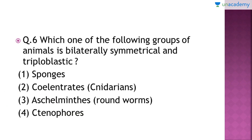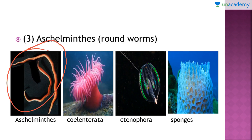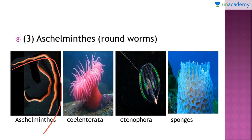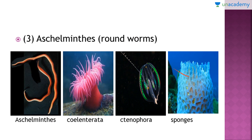Bilateral symmetry means if you cut an organism from the medial portion — from the middle — the two halves you get should be exactly the same. Triploblastic means the organism has developed from three germinal layers: endoderm, ectoderm, and mesoderm. This is true for Aschelminthes or roundworms, but not for Coelenterata, Ctenophora, and sponges. Hence the right answer is option number 3, roundworms.